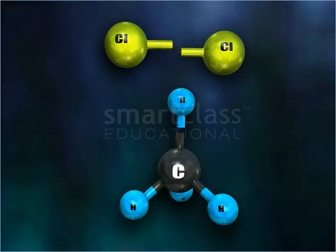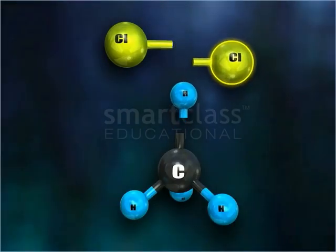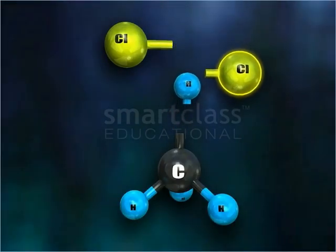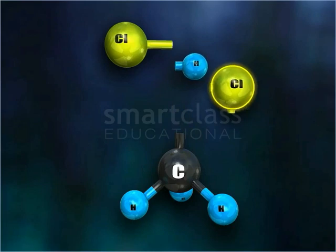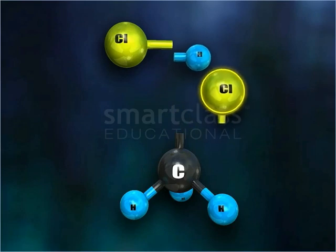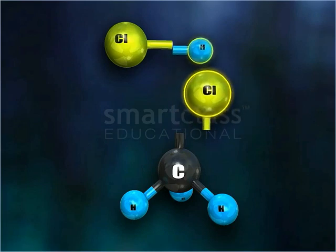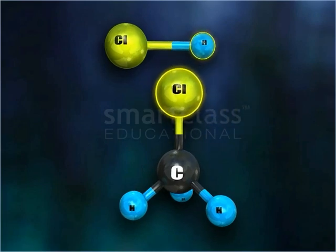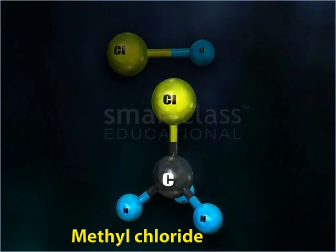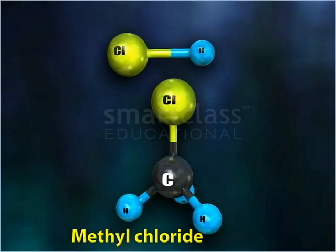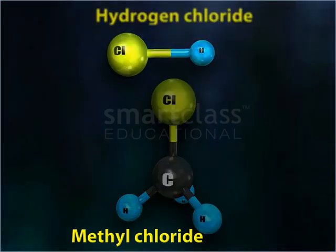One of the chlorine atoms of the chlorine molecule substitutes one of the hydrogen atoms of ethyl bromide to form ethyl chloride and hydrogen chloride.